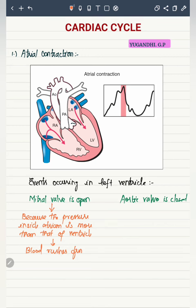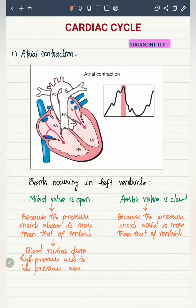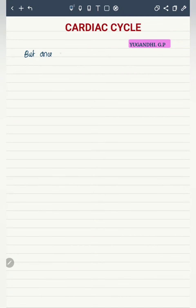Blood rushes from the atrium into the ventricle along with the pressure. Once the ventricle starts getting filled, the pressure inside the ventricle rises. The aortic valve is closed because the pressure inside the aorta is more than that of the ventricle, so the blood remains within the ventricle and the ventricular volume keeps increasing. Once the ventricular pressure rises above the aortic pressure, the aortic valve gets opened.